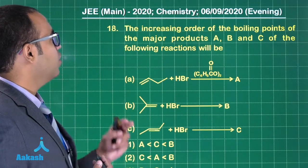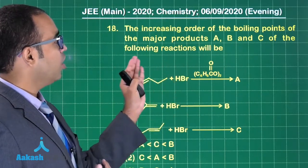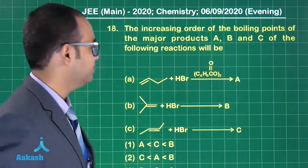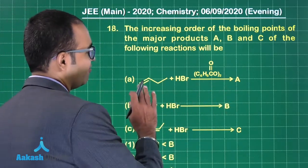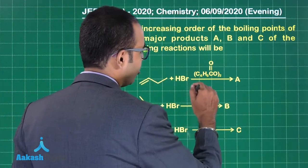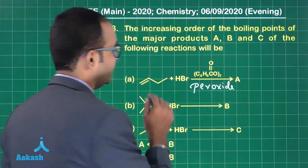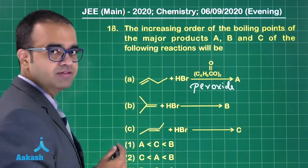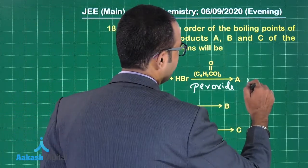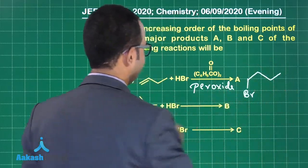Question 18: find the increasing order of boiling points of the major products A, B, and C of the following reaction. We have butene and we are adding HBr. Since a peroxide is used, it will go by anti-Markovnikov's rule, so Br will be attached on the first carbon. This is product A.